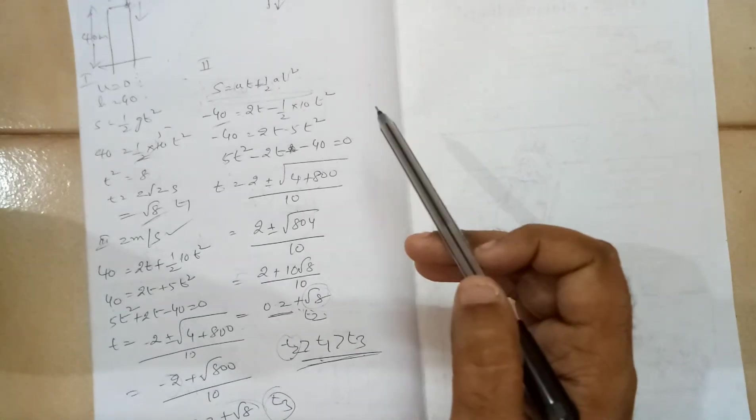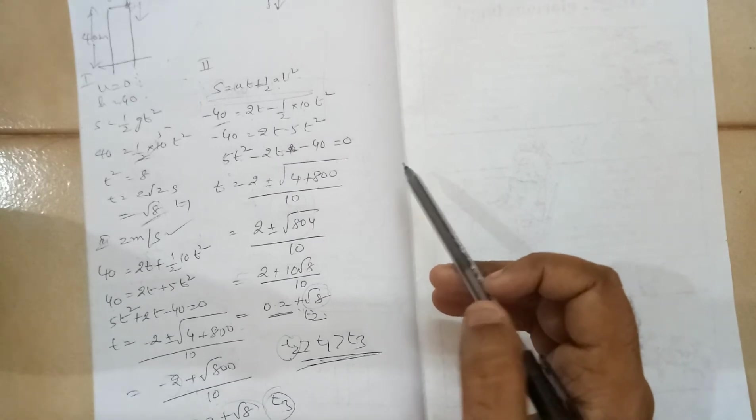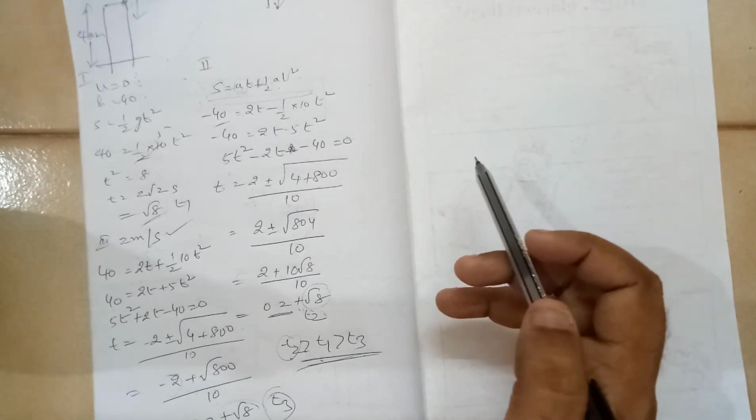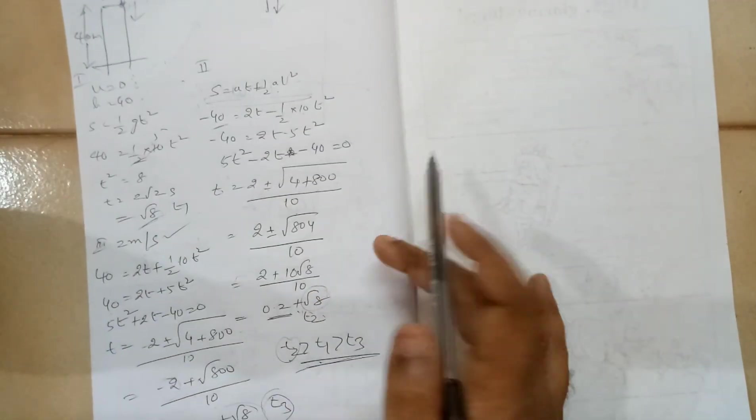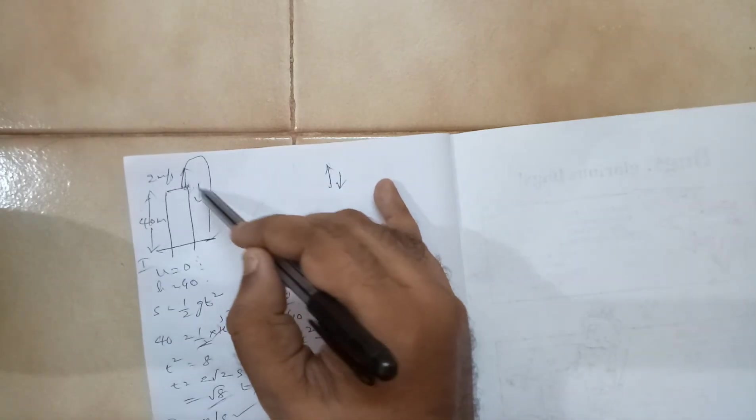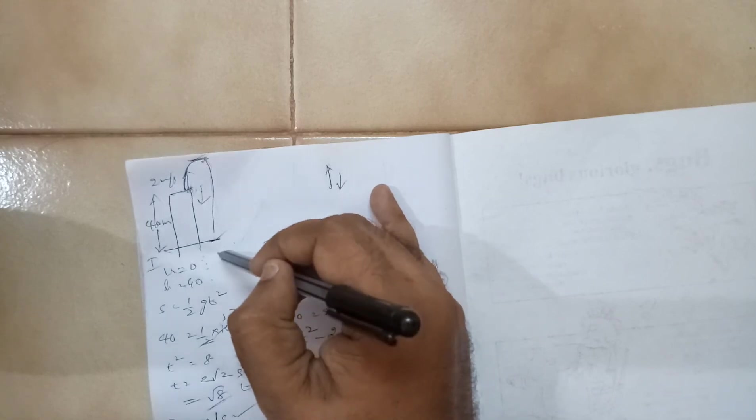When you just release the body and you throw the body down, when it will take more time? When you throw the body down. And where maximum time will take when you throw the body in the upward direction, that it will travel some distance. When you throw it up, it will go like this.